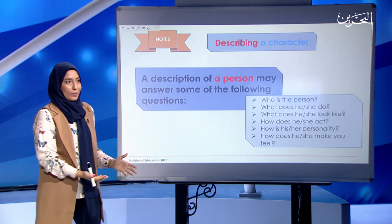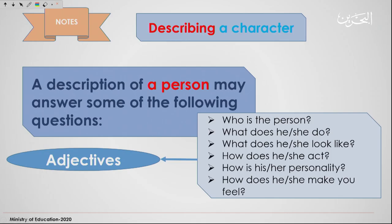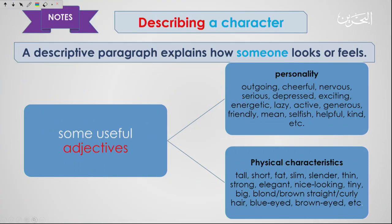We use adjectives — a descriptive paragraph explains how someone looks or feels. I'm giving you two types; you can add more. For personality, you can say: outgoing, cheerful, nervous, serious, depressed, exciting, energetic, lazy, active, generous, friendly, mean, selfish, helpful, kind.